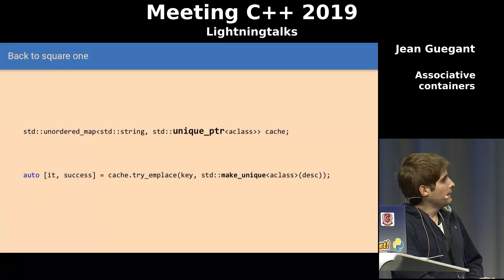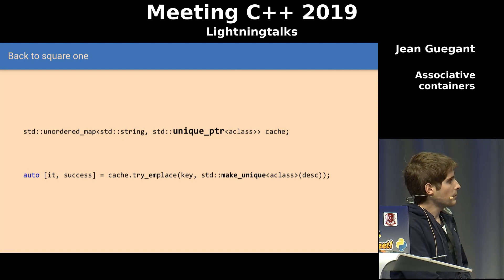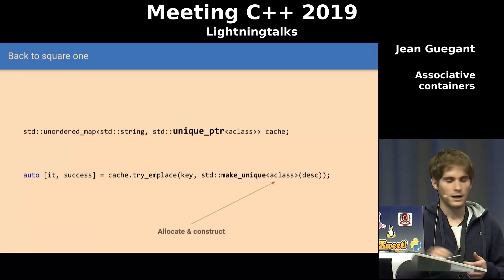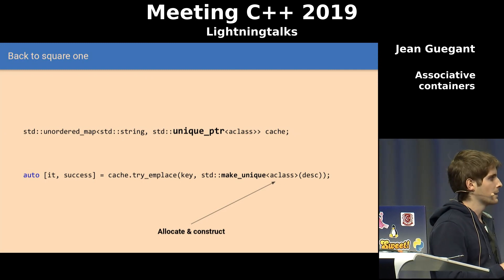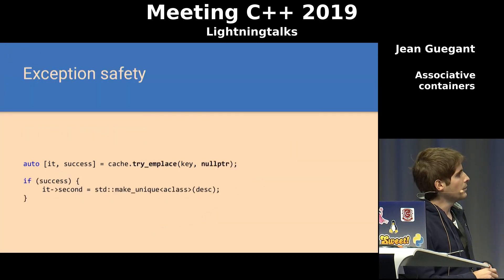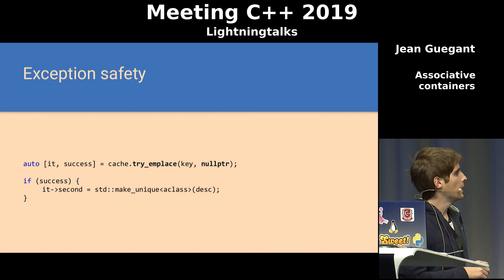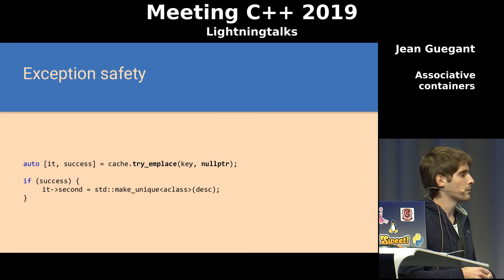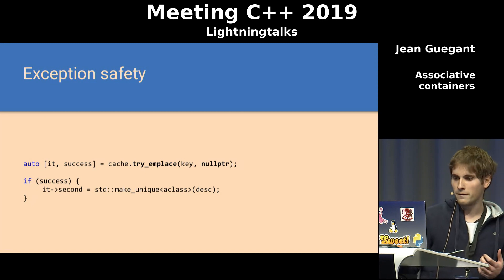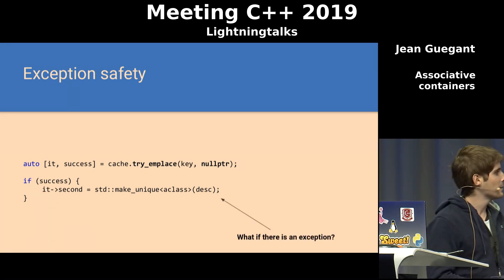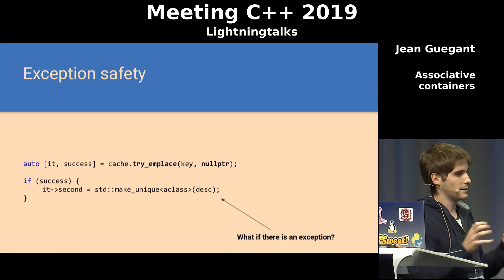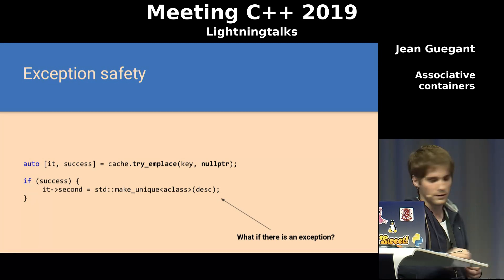Why? If I have a unique pointer as a value, I will need to supply a unique pointer when I do a try_emplace. To make a unique pointer, I need to allocate and construct something most of the time. So we have exactly the same issue as insert. One thing you could do is insert a null pointer first and check if try_emplace succeeded. If it succeeded, then construct the unique pointer. But if you have an exception in between these two statements, you will have a map in an inconsistent state with a null pointer inside. That's not great — it's kind of dangerous.